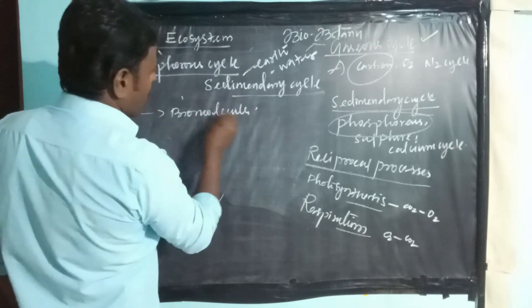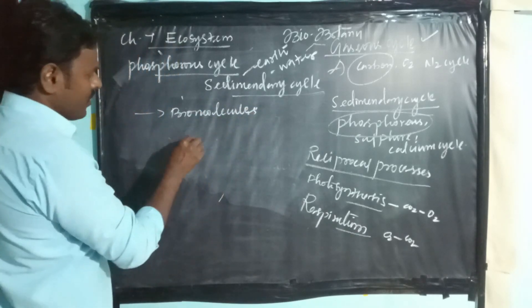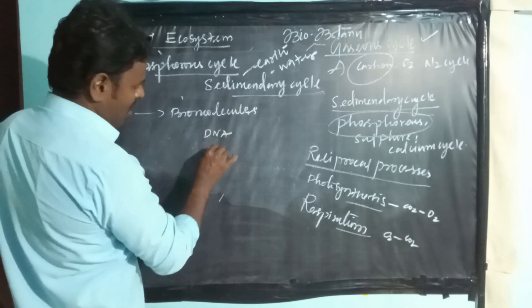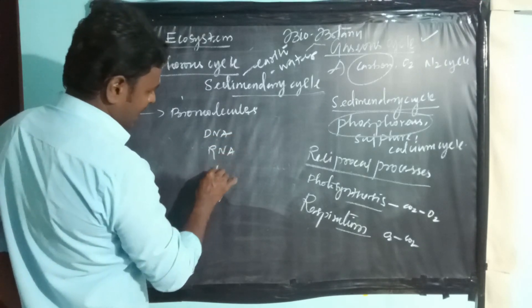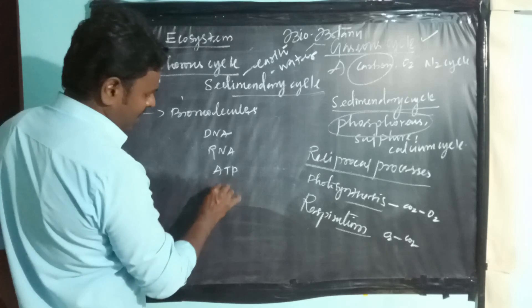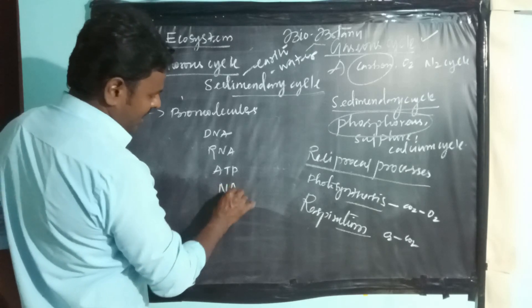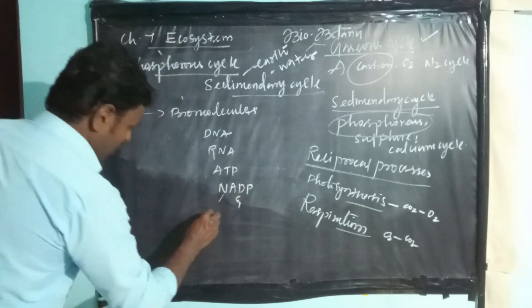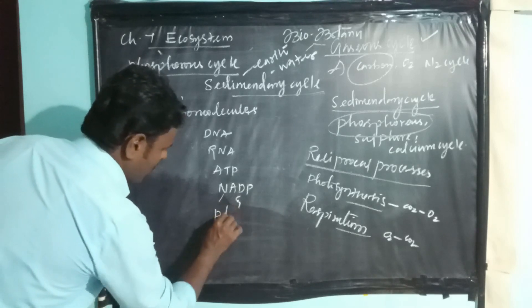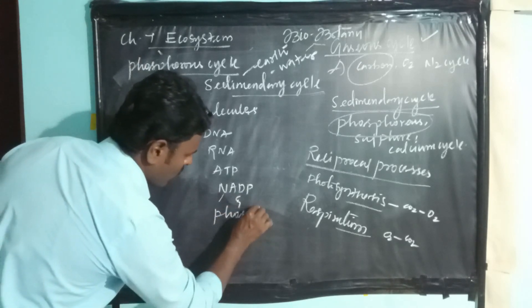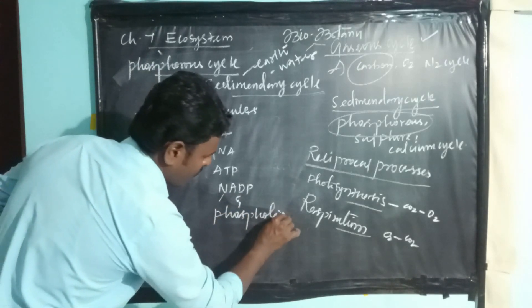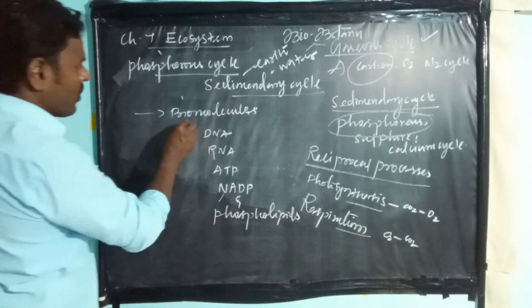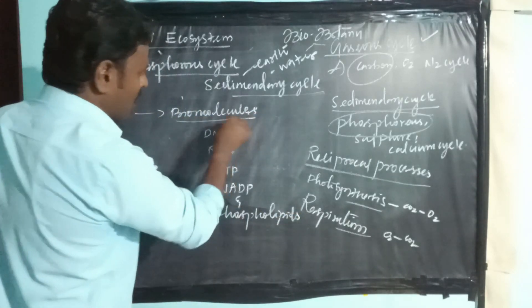The phosphorus-containing biomolecules include DNA, RNA, ATP, NADP, and phospholipids. These are the biomolecules that contain phosphorus.